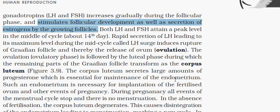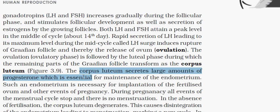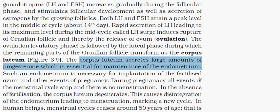During pregnancy, the menstrual cycle is stopped. But if there is no menstrual cycle, that doesn't confirm pregnancy — it can also be due to events like stress and other causes. In the absence of fertilization, the corpus luteum degenerates, causing disintegration of the endometrium and again starting menstruation.